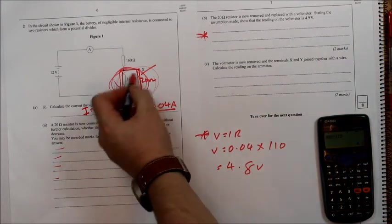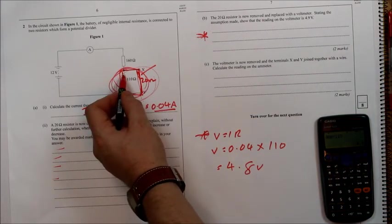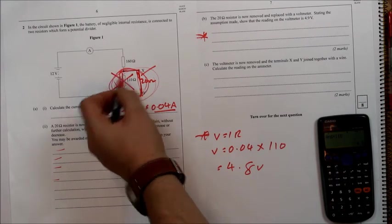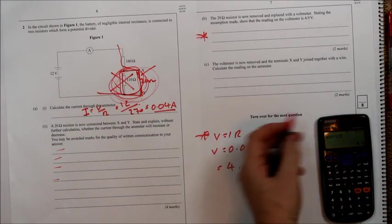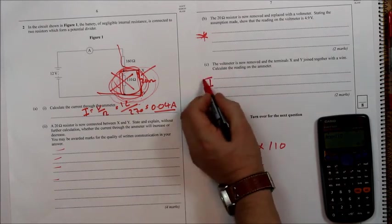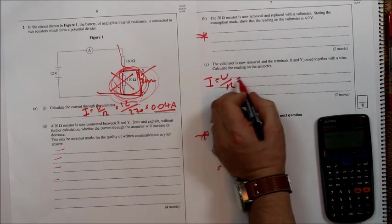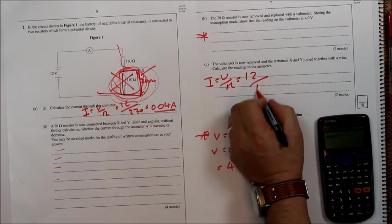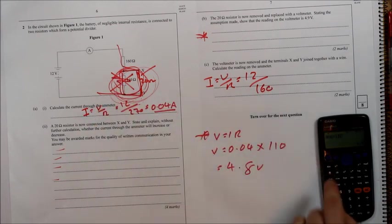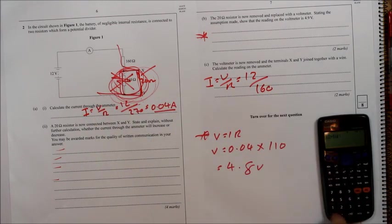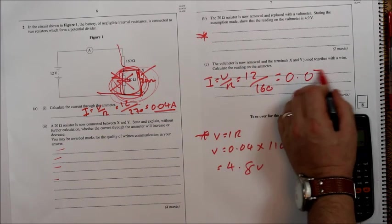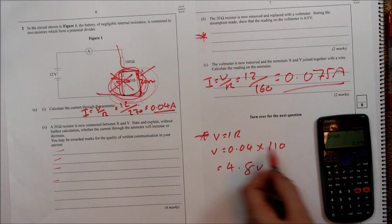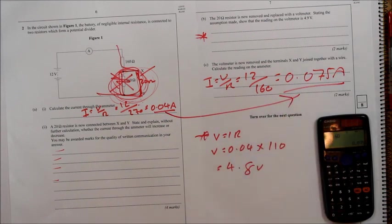Well, if that's joined with a wire, this resistor here is effectively not part of the circuit anymore because the current will flow around it. So, the reading on the ammeter, I, is now V over R, which is 12 over 160 because this one doesn't count. Which would be 0.075 amps, which we can see has gone up because the resistance has gone down even further.